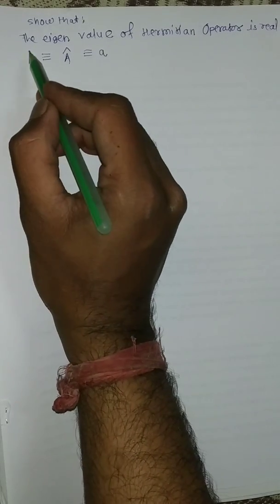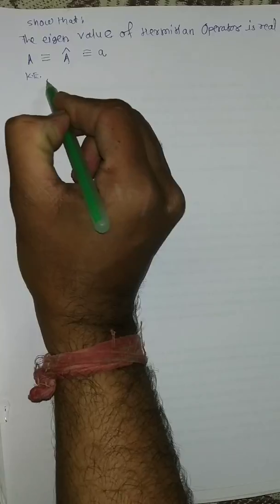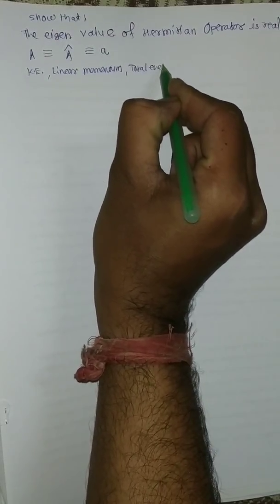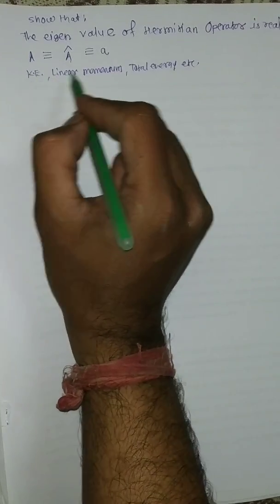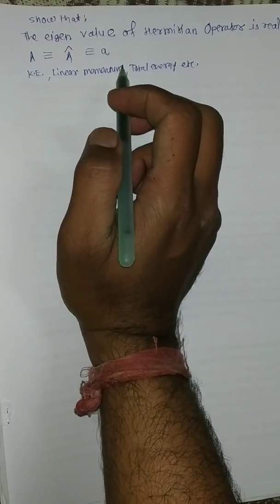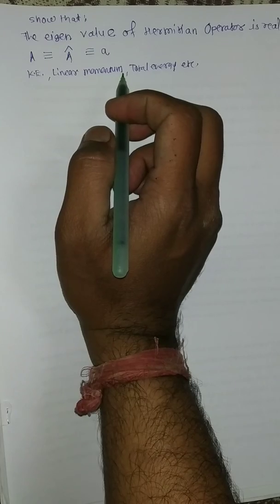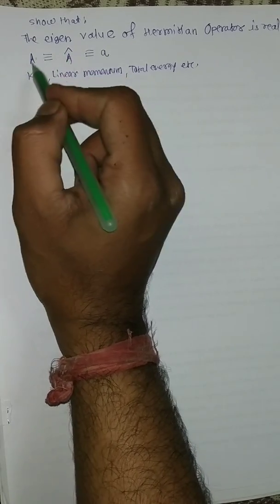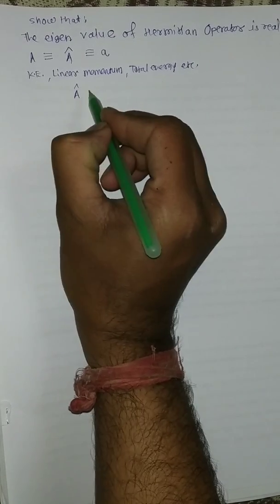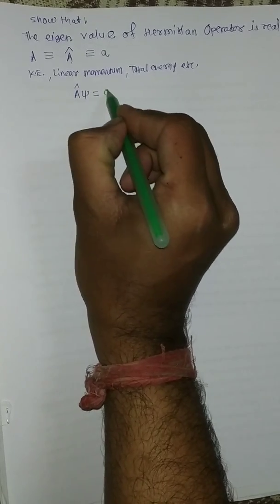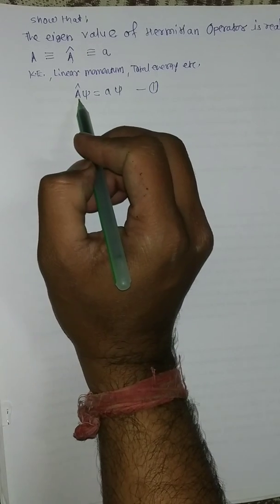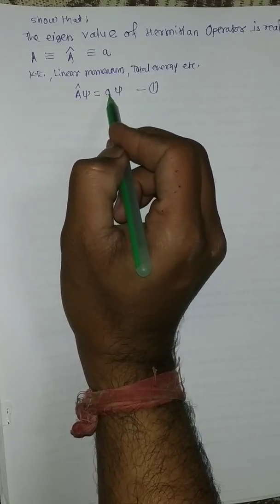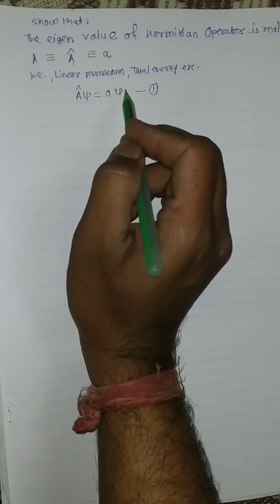If you have any observable property like kinetic energy, linear momentum, or total energy, these are the observables used to measure the properties of different microscopic particles. If A is any observable associated with this operator having a constant eigenvalue A, then this operator follows the eigenvalue equation: A-operator times ψ equals A times ψ. Here, A-operator is the observable operator, ψ is the eigenfunction, and small A is the eigenvalue.